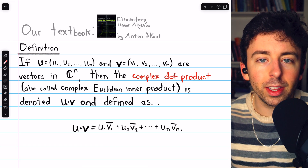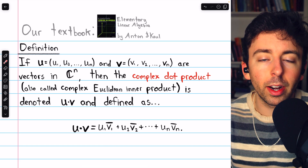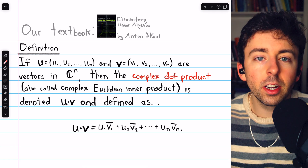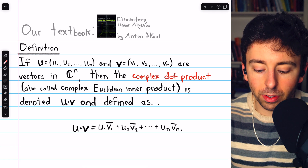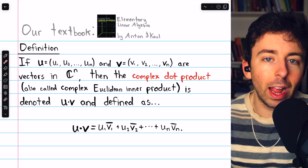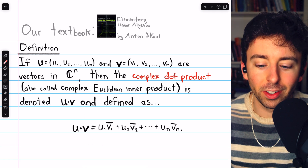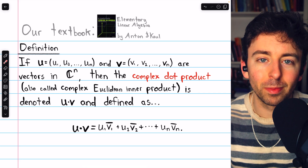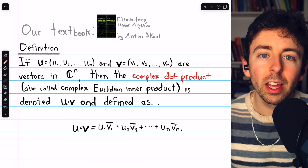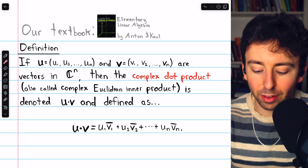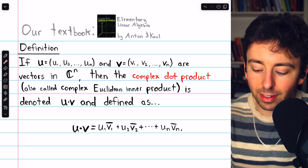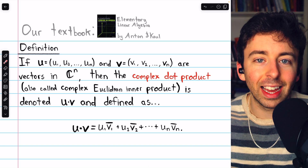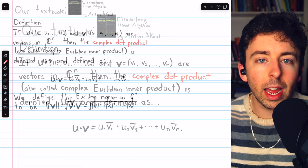So it's a little different than the dot product in Rn. Note that we could use this same definition in Rn if we wanted to, since the conjugate of a real number doesn't change it. But here, we've got to make sure to take the conjugates of the components of that second vector.